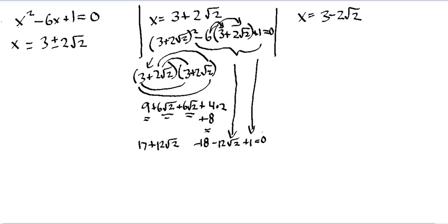Now we can clean up and see if this is true. Notice we have a plus twelve times the square root of two and a minus twelve times the square root of two — those cancel each other out. We're left with seventeen minus eighteen plus one, which sums to zero equals zero. That proves that the solution is correct. You might think, well, zero equals zero — but if you had plugged in an incorrect solution, you might end up with something like seven equals zero, or the square root of two equals zero, and neither of those is true. The fact that we've arrived at a true statement proves the solution is correct.